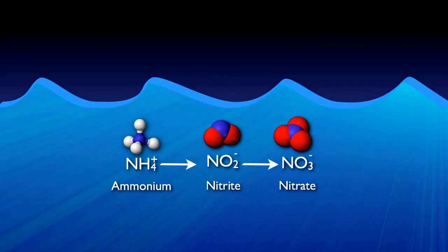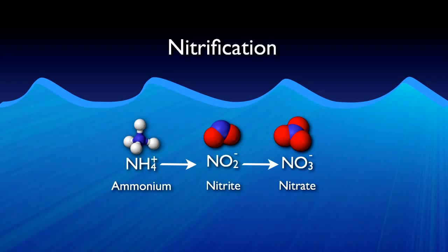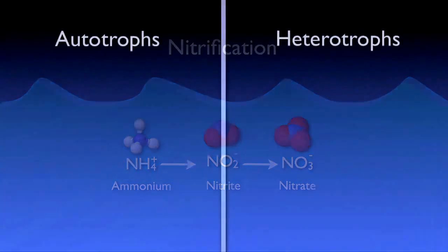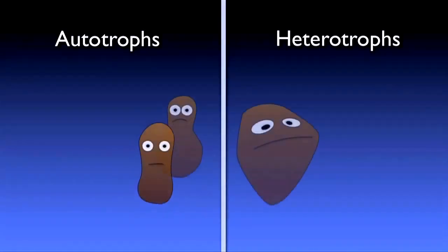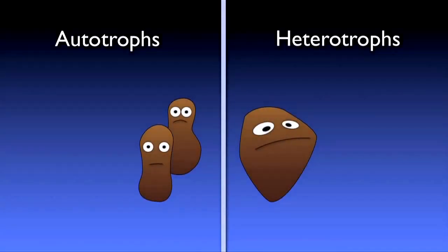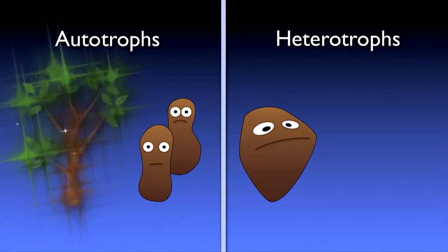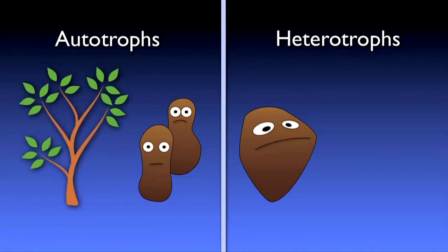The next step consists of converting ammonium to nitrite and then nitrate — a two-step process usually lumped into one term: nitrification. This step is facilitated by specialized autotrophic bacteria. Autotrophs obtain their carbon from non-organic sources such as carbon dioxide and alkaline bicarbonate. Plants are good examples of how this is done.